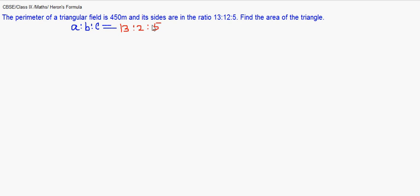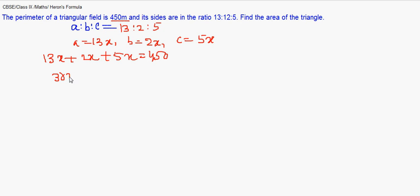So we assume A to be 13x, B to be 12x, and C to be 5x. That means A+B+C is 450 as it is the perimeter given. So we have 13x+12x+5x giving us 450. So let's solve for x. We are getting 30x=450, so x is 15.